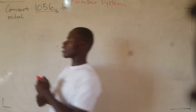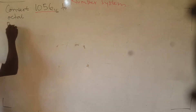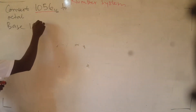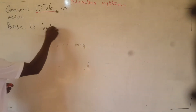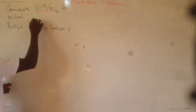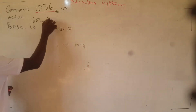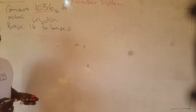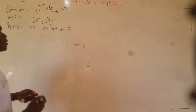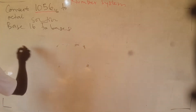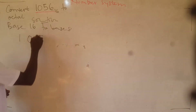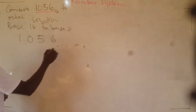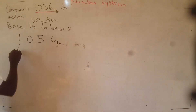In other words, we are converting from base 16 to base 8. That's what we are doing. There are so many ways we can do this. Let's look at one of the ways — it's very easy. We'll just write 1056, which is in base 16.